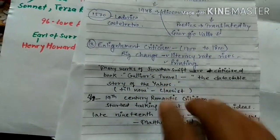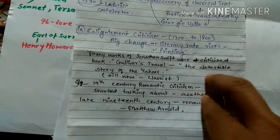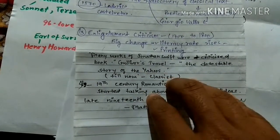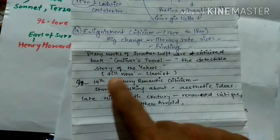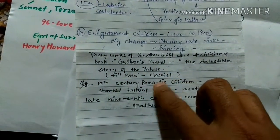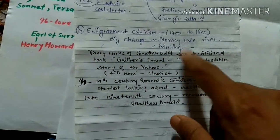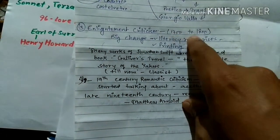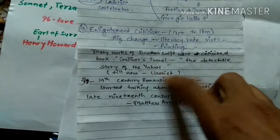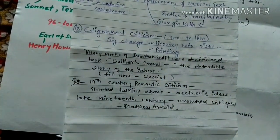During the Enlightenment we also saw works like Gulliver's Travels, and critics had opinions — calling it the detestable story of the Yahoos. Up until this point, between 1700 and 1800, critics were all classicists. When we say classicist, we mean someone attached to strict rules — they would evaluate works only under those strict rules.